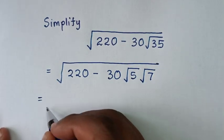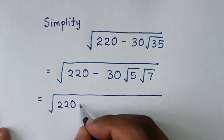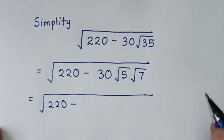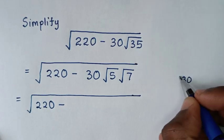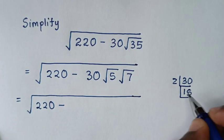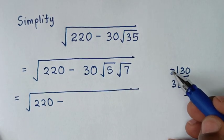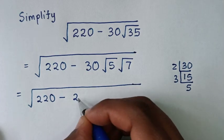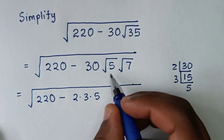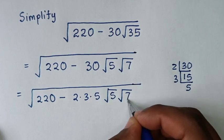It will be equal to square root of 220 minus, from here, 30. We find the factors of 30: 30 is divisible by 2 to give 15, then by 3 to give 5. So the factors of 30 are 2 times 3 times 5, times square root of 5 times square root of 7.